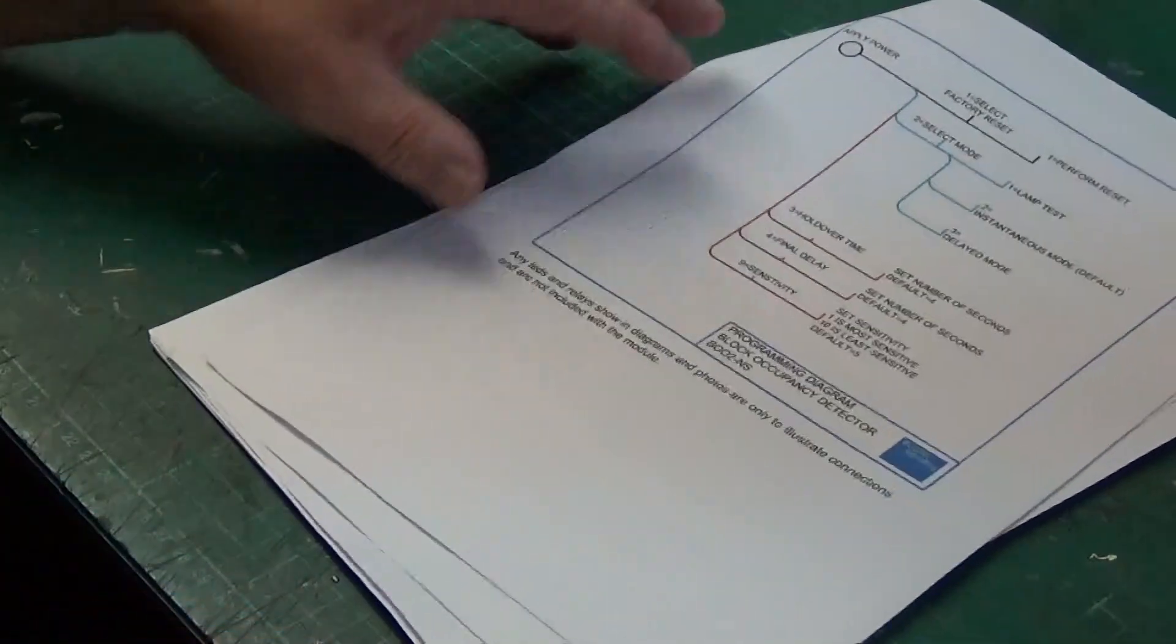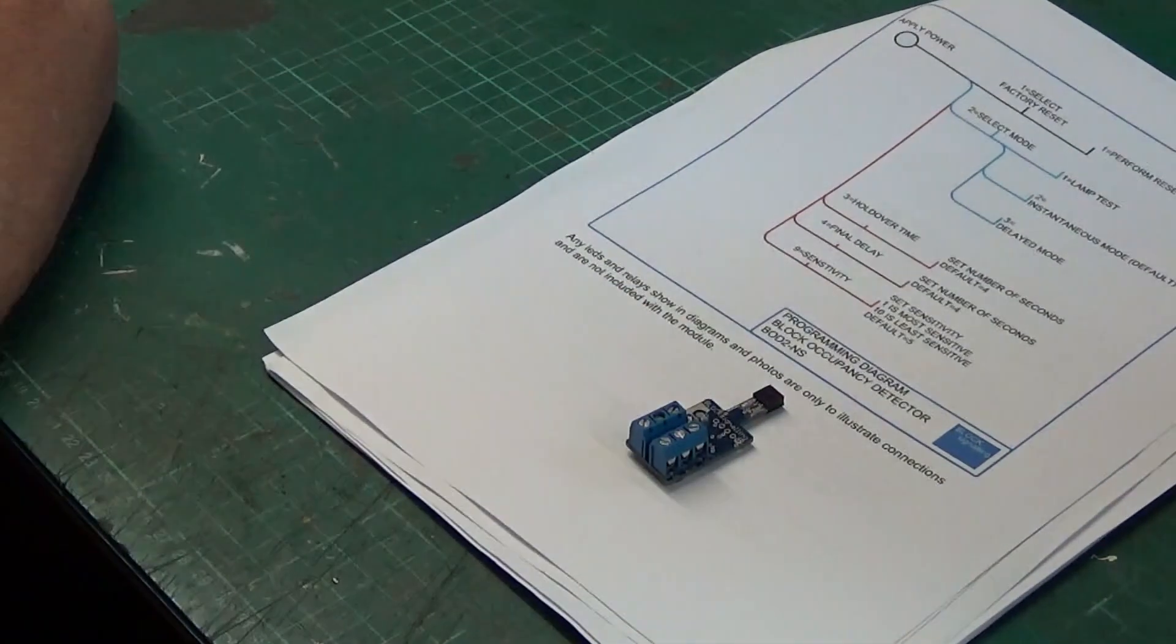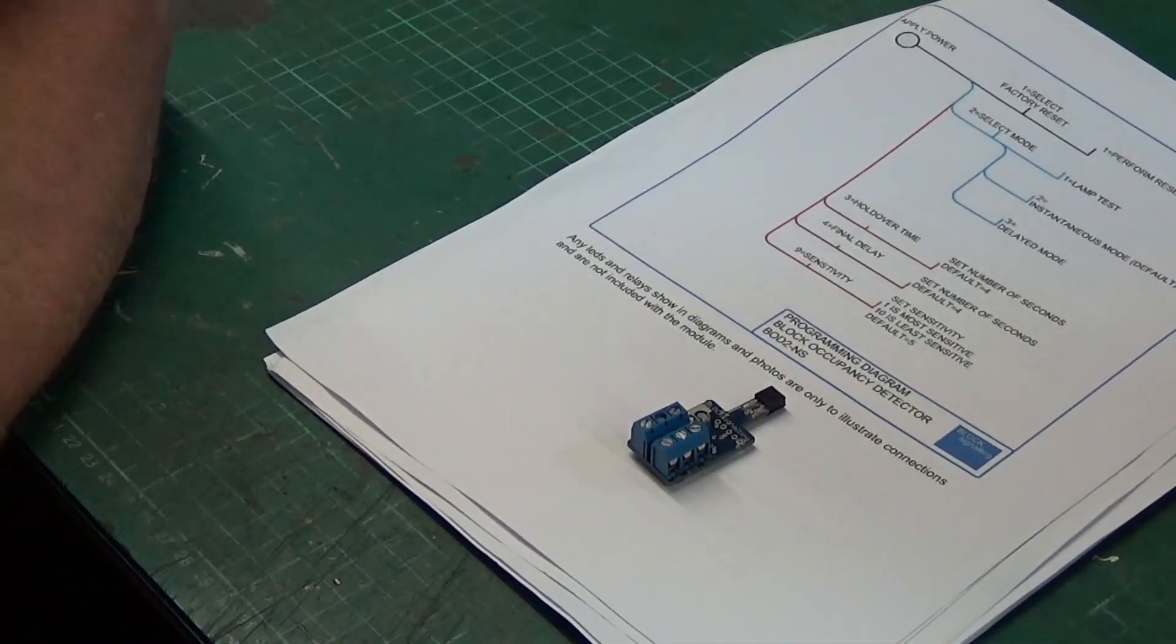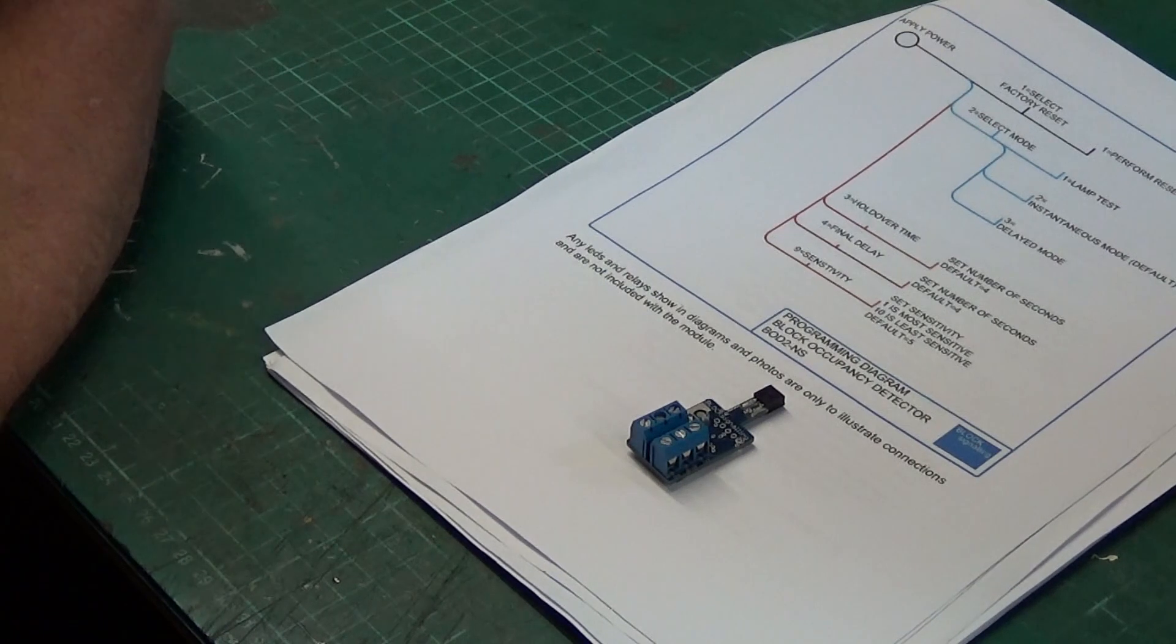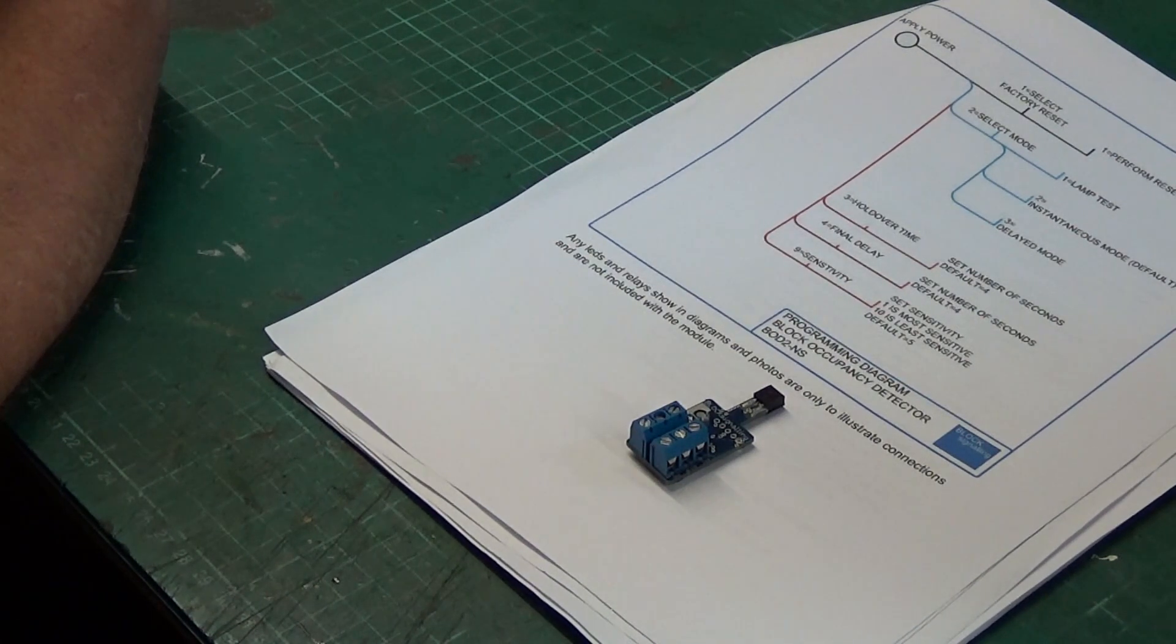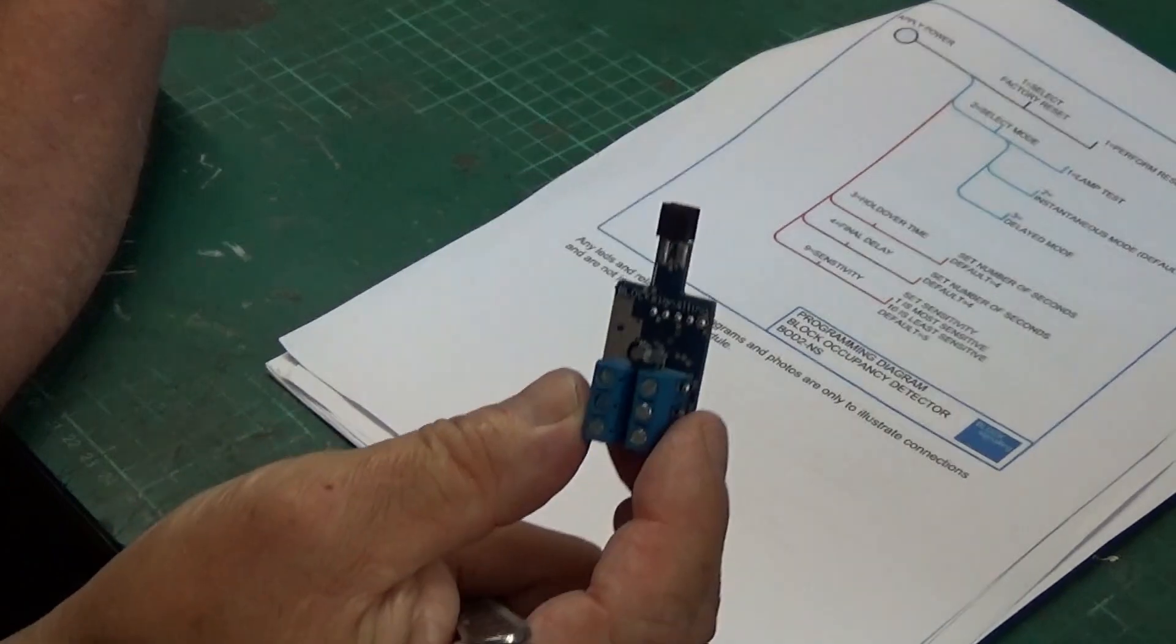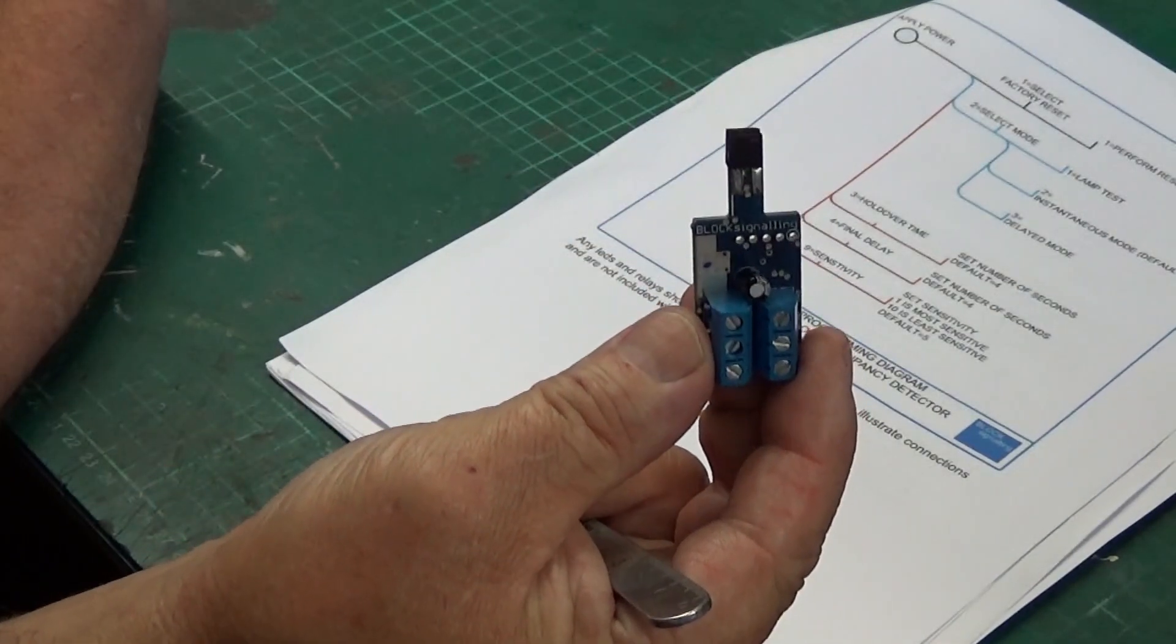So yeah, that's the BOD2NS train detector module from Block Signal. I just thought I would share that with you in case anybody else was thinking of train detection modules, and it might be one for you to consider. As I say, I cannot fault these. I haven't had any trouble with these at all.